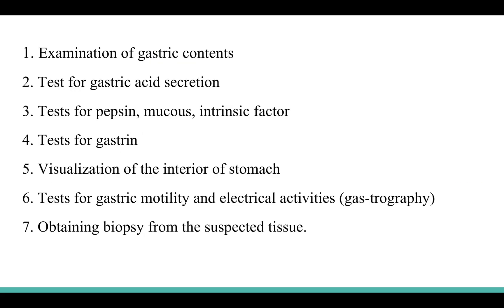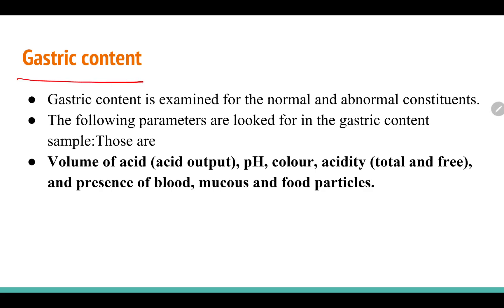The various gastric function tests include: examination of gastric content, test for gastric acid secretion, test for pepsin, mucus and intrinsic factor, test for gastrin, visualization of the interior of the stomach, test for gastric motility and electrical activities, and obtaining biopsy from suspected tissue. For gastric content, we examine normal and abnormal constituents — including volume of acid, pH, color, acidity, and presence of blood, mucus, and food particles.